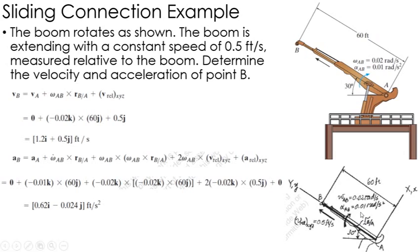So once I go through all of the cross products and addition, I find that the acceleration of B is actually 0.6 in the i, negative 0.024 in the j. Now, again, keep in mind what direction my x and y axes are.